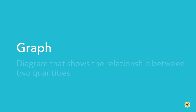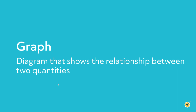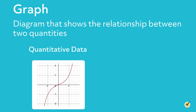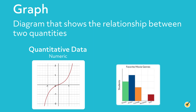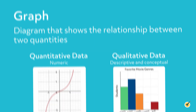Before we get started, let's review a few things. First, a graph is a diagram that shows the relationship between two quantities. Some graphs display quantitative data, which is numeric, and others display qualitative data, which is descriptive and conceptual.